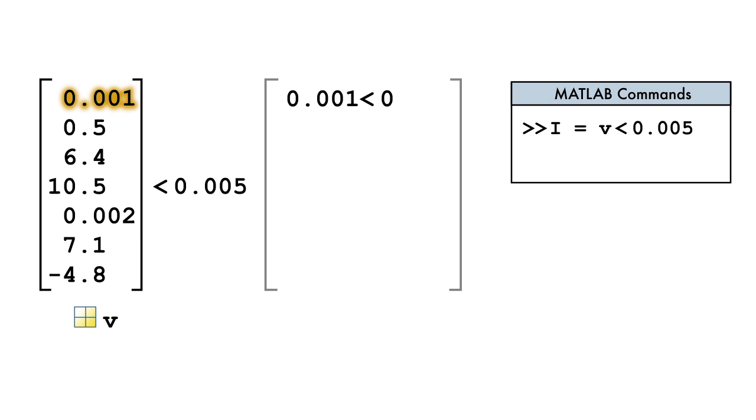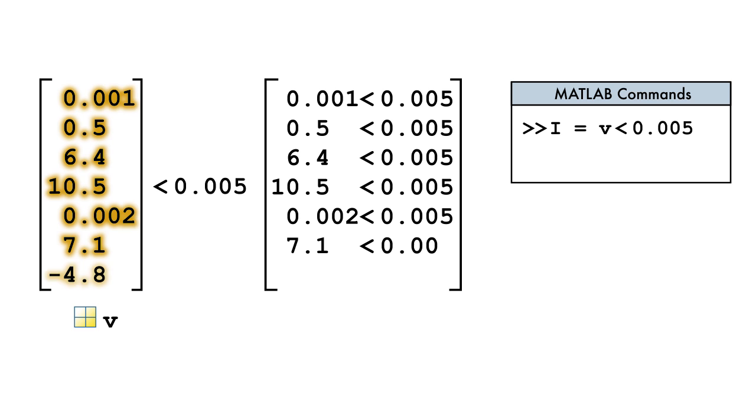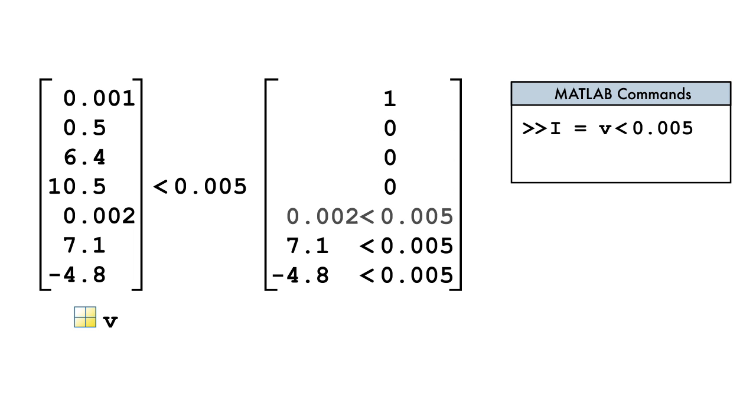This command compares each element of v with 0.005 and combines the result of every operation into an array of the same size as v.